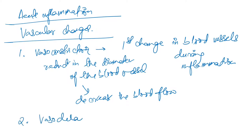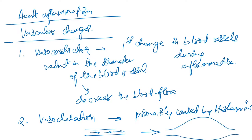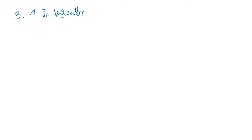After vasoconstriction comes vasodilation, and it is primarily caused by histamine. In vasodilation the blood vessel becomes wider, there is increase in blood flow, and then there is increase in redness.